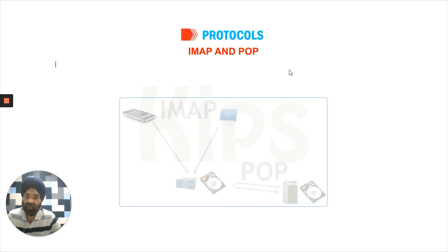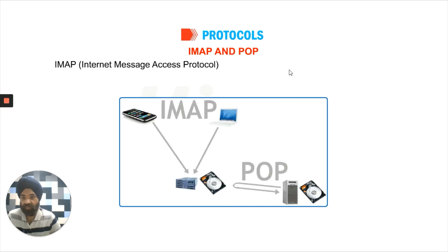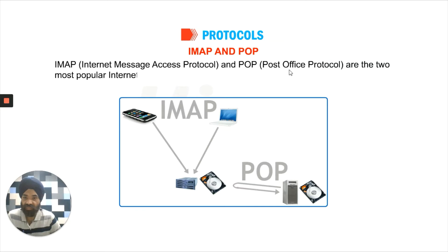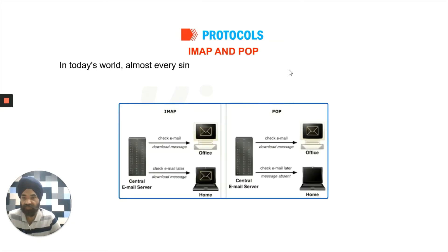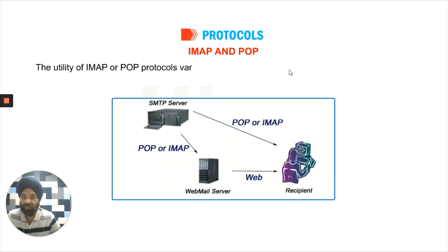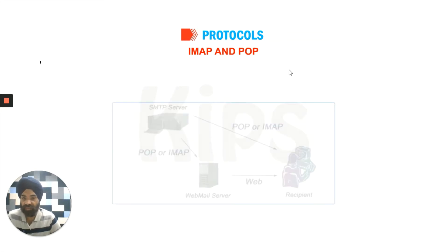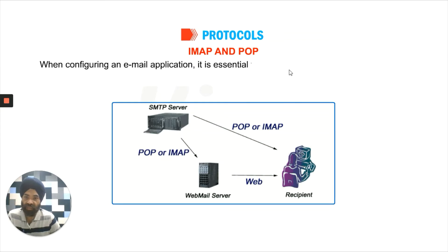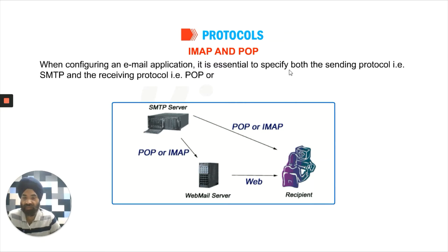Then we come to IMAP and POP. IMAP is Internet Message Access Protocol and POP is Post Office Protocol. These are the two most popular Internet standard protocols for retrieving emails. Almost every single email client supports both these protocols due to their wide acceptability. The utility of IMAP or POP varies with respect to their usage in different environments. When configuring an email application, it is essential to specify both the sending protocol, that is SMTP, and the receiving protocol, that is POP or IMAP.